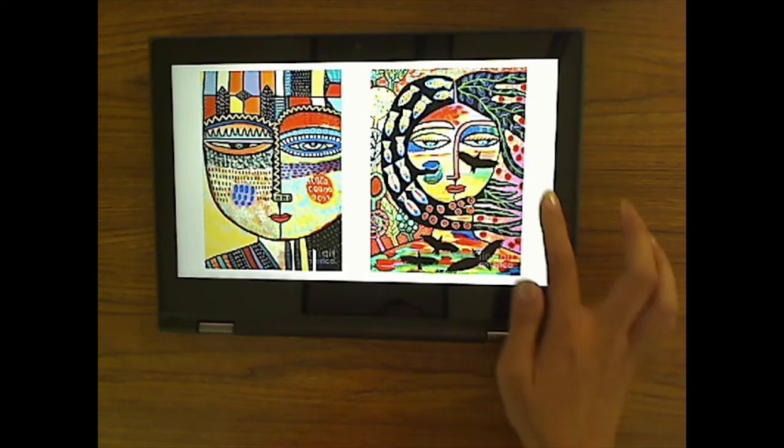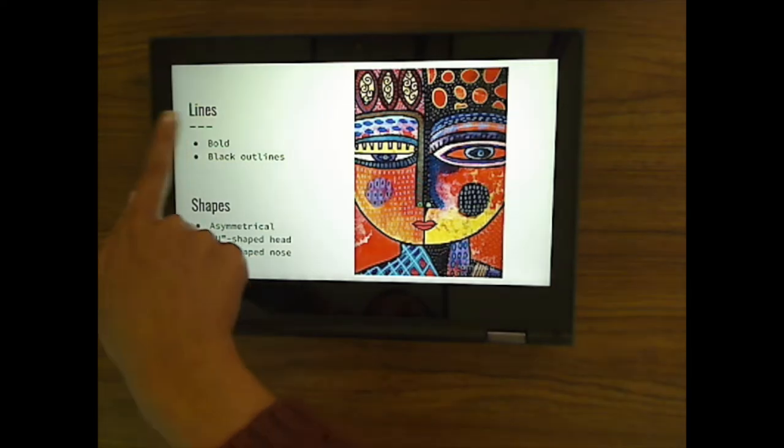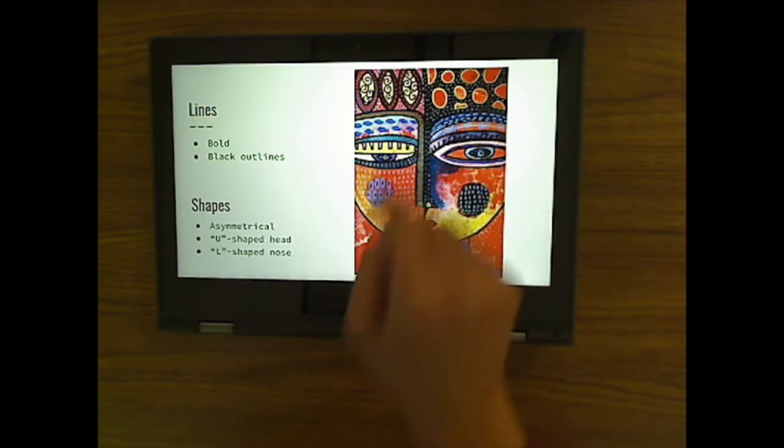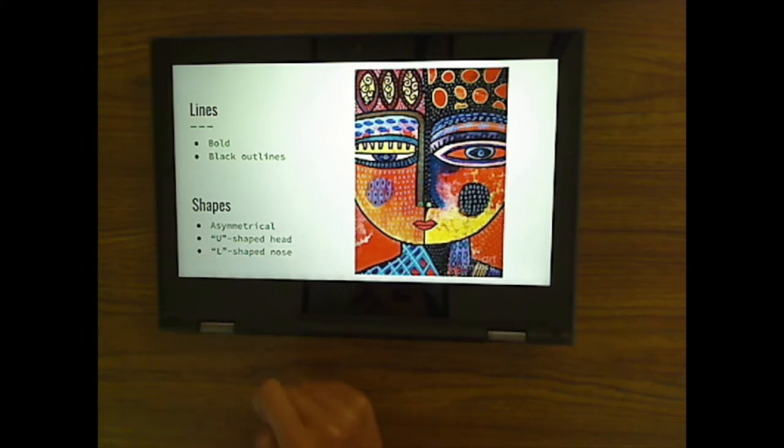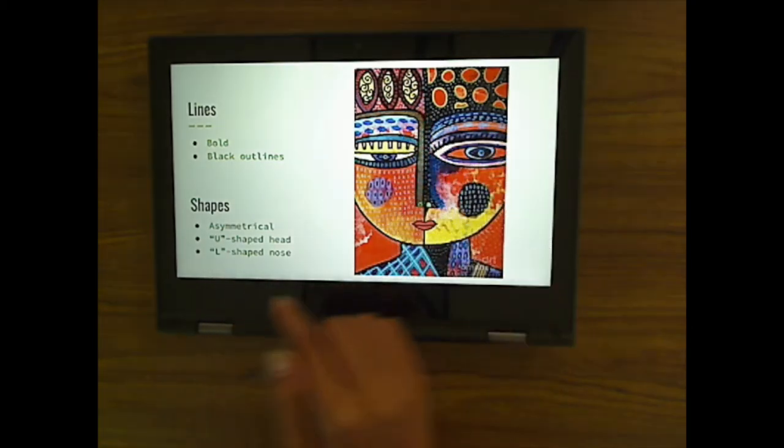Here's some more of her artwork. So in her artwork, we can see lots of different elements of art. Specifically, let's look at the lines that she uses. She uses very bold lines. Bold means that those lines stand out or stick out, and they're usually black outlines. So everything she does is outlined in black. The shapes that she uses are usually asymmetrical. Asymmetrical means not symmetrical, not the same. So that means the shapes look different on each side. And the head is usually U-shaped. And there's usually an L-shaped nose. And that nose can be a forwards L or a backwards L.